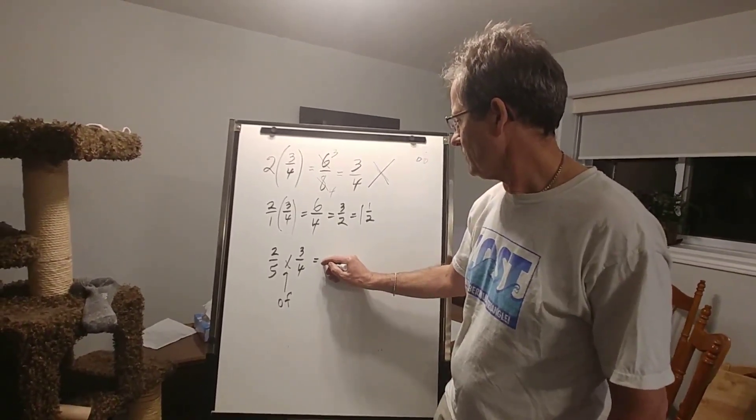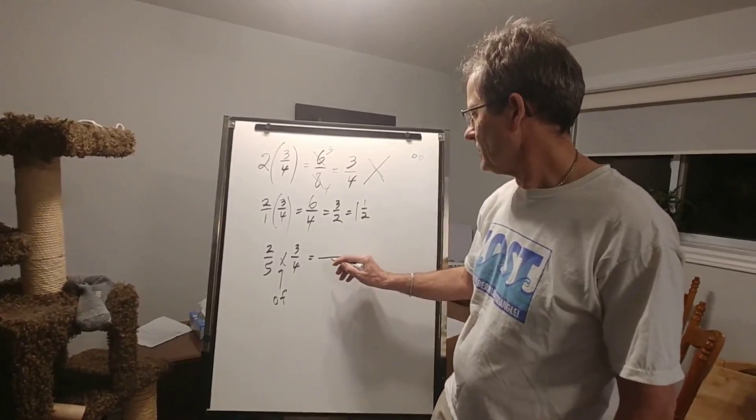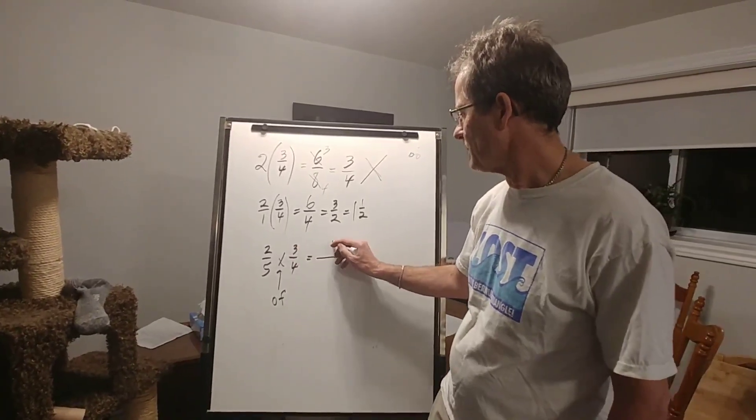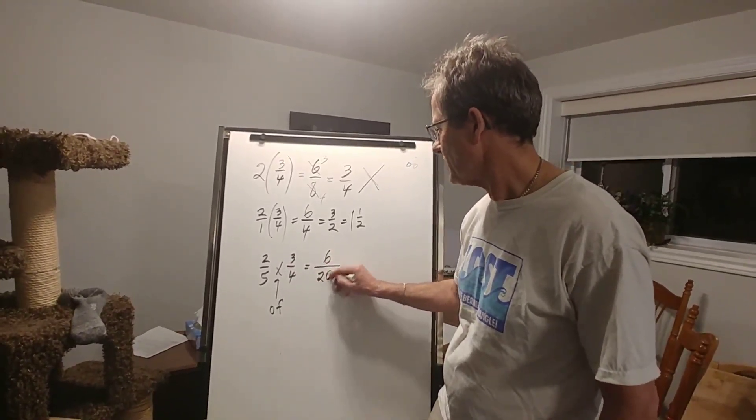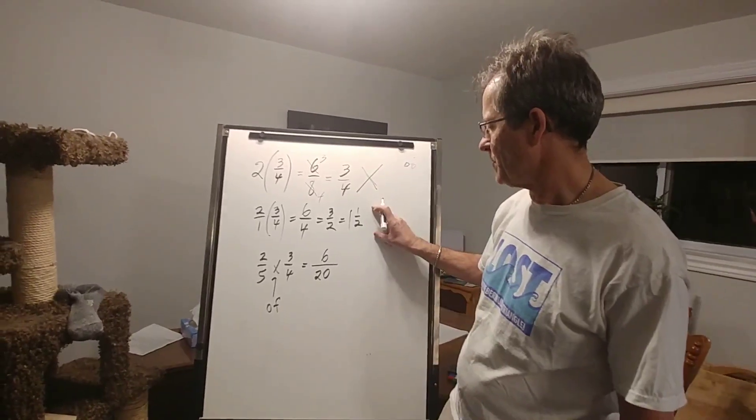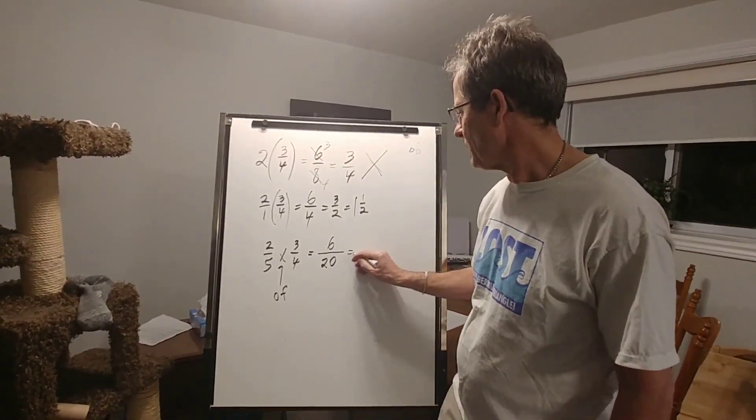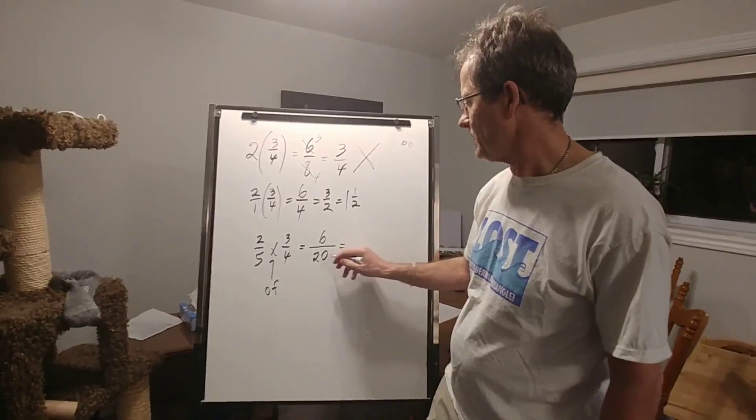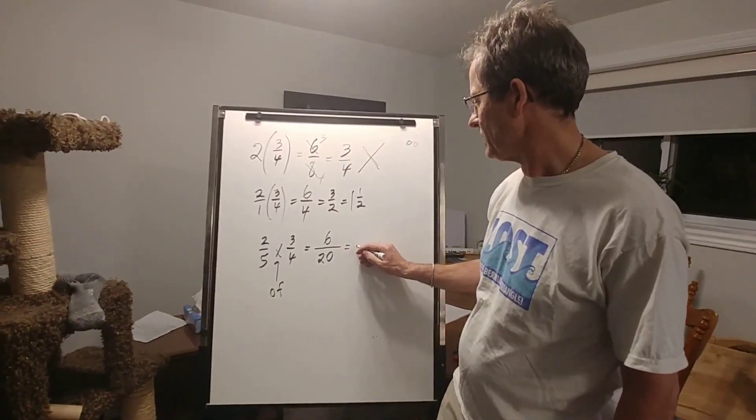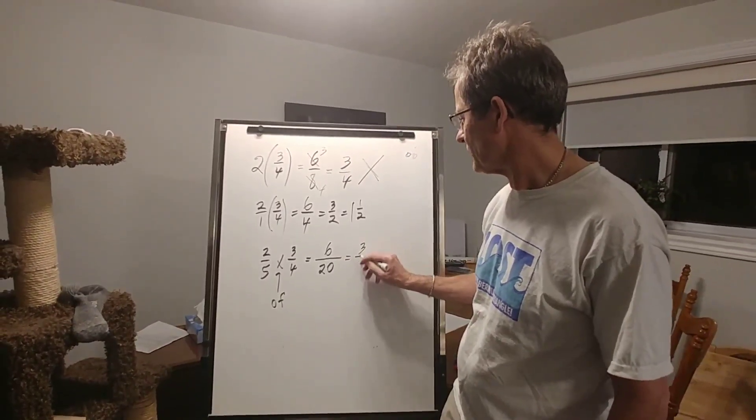Before we do any cancellation, let's just multiply the top numbers, multiply the bottom numbers. That's how we got this up here. And then we notice that can be reduced because you can divide six and twenty both by two. If I divide by two, I'll get three over ten.